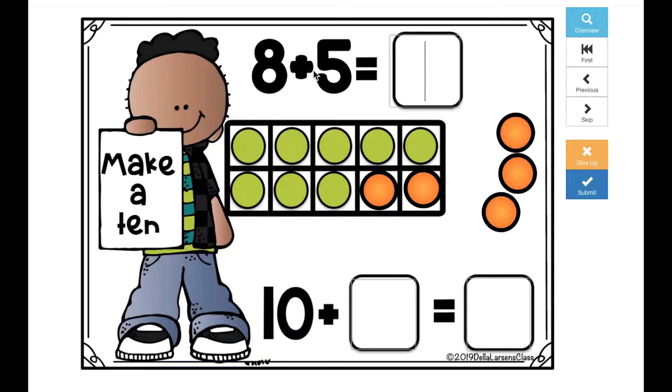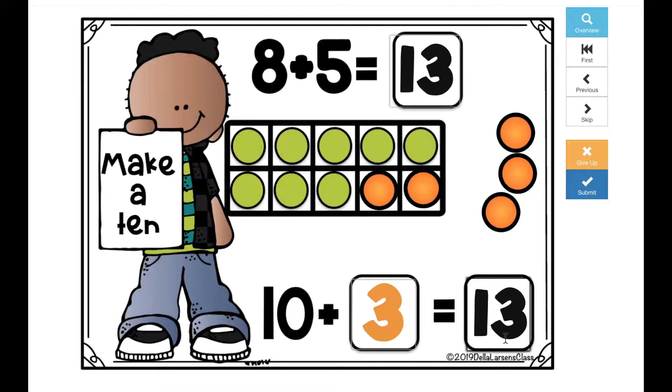So we now know that 8 plus 5 is the same as 10 plus 3. 10 plus 3 is so much easier than 8 plus 5, but we know it's the same. So if 10 plus 3 is 13, then we know 8 plus 5 is 13.